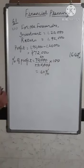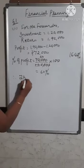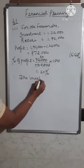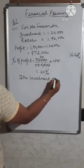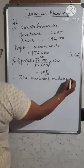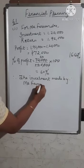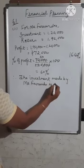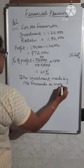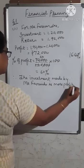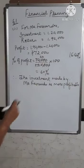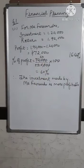Therefore, the investment made by Mr. Fernandez is more profitable. Like this, you first find the percentage of profit of Syed and the percentage of profit of Fernandez, then compare both percentages and write the final statement: the investment made by Fernandez is more profitable.